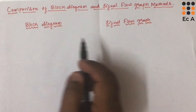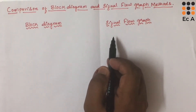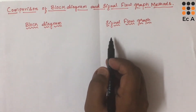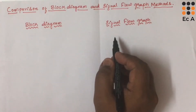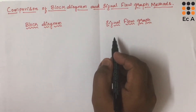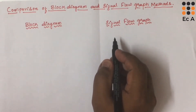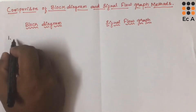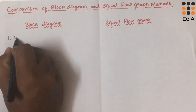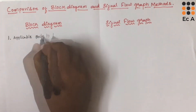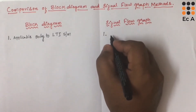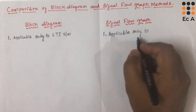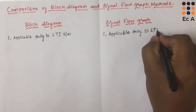Both block diagram as well as signal flow graph are used to find the overall transfer function of the given system. Both block diagram as well as signal flow graph methods are applicable only to LTI systems.